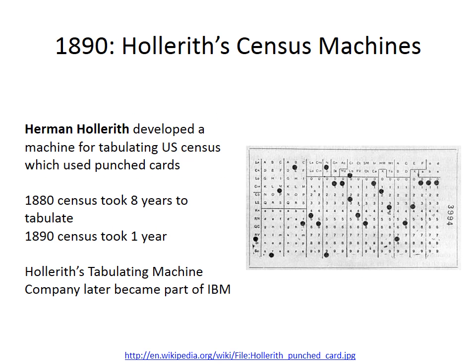The 1880 US Census took eight years to tabulate. It would have taken even longer to tabulate the 1890 census, but thankfully Herman Hollerith's tabulating machine was able to complete the tabulation in just a single year. The machine used punched cards to speed up the calculations. Hollerith founded a company which would later become part of IBM.